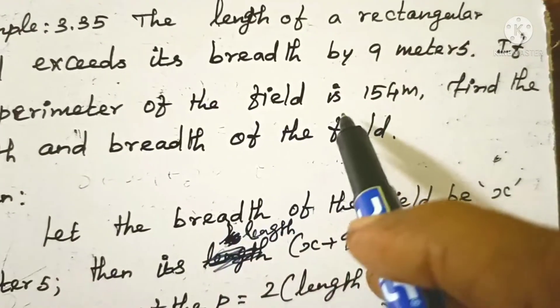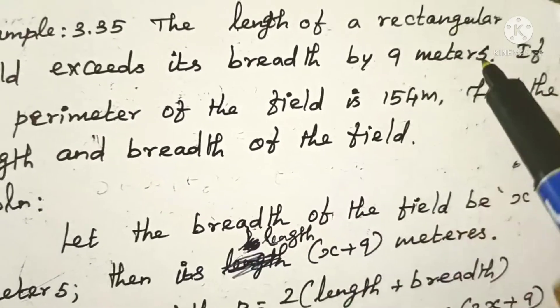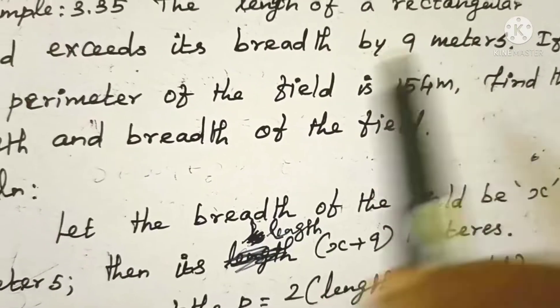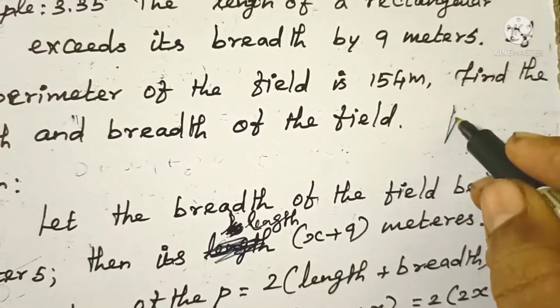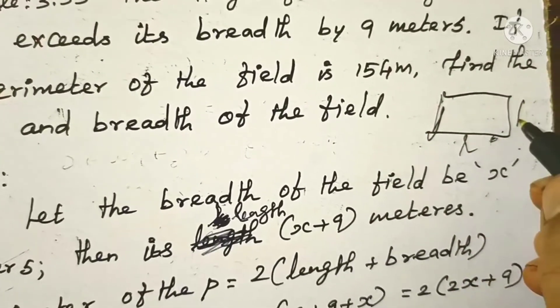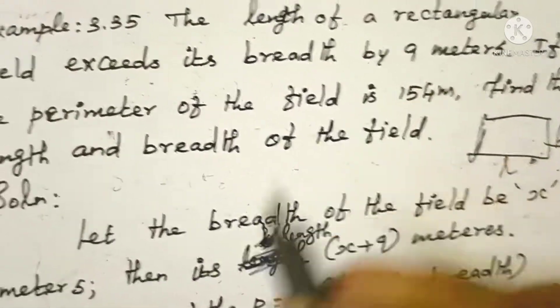If the perimeter of the field is 154 meters, find the length and breadth of the field. The perimeter is 154 meters. Solution: